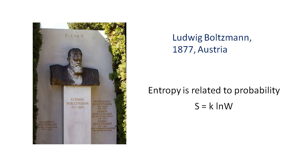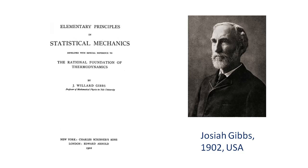American physicist Josiah Gibbs provided a more general formulation of statistical mechanics than Boltzmann, and introduced the idea of the microcanonical, canonical, and grand canonical ensembles. He coined the term 'statistical mechanics,' which appeared in the title of the book he published in 1902. Interestingly, the subtitle of his book is 'The Rational Foundation of Thermodynamics.' I think you will understand the appropriateness of this as we go along in the course.